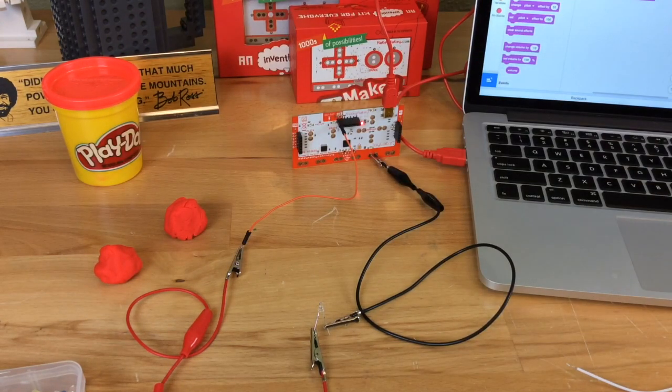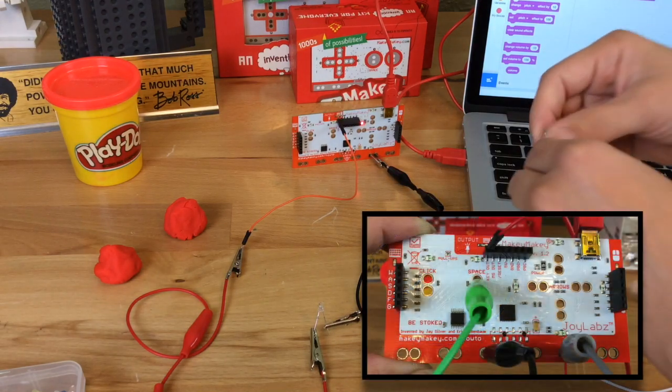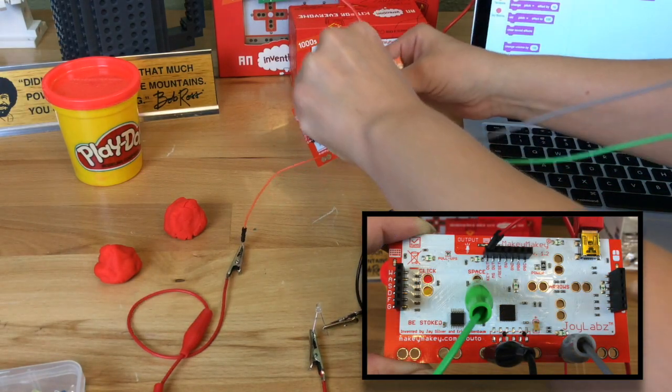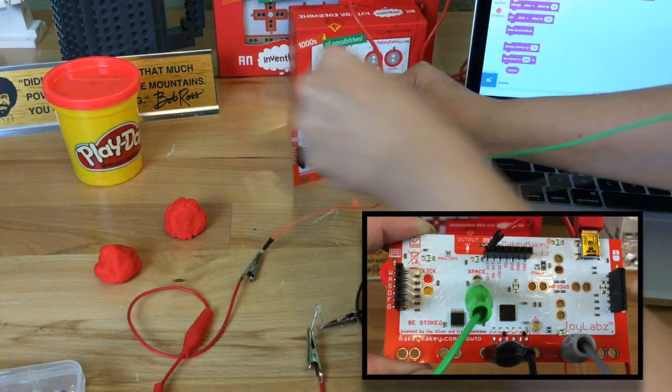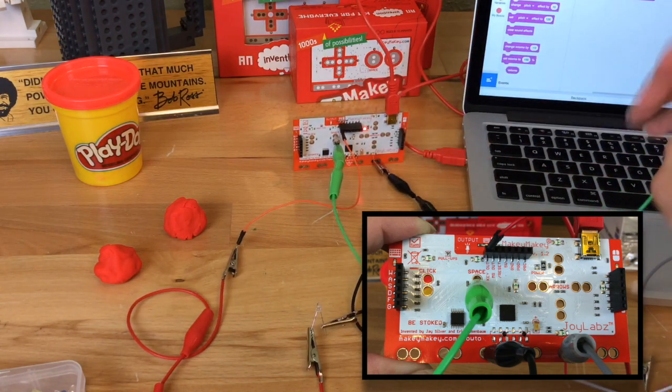To make a switch out of Play-Doh, we're going to take an alligator clip and clip to space. We can do it on the back or the front of the board, but since this is a back-of-the-board tutorial, that's where we're going to keep it.